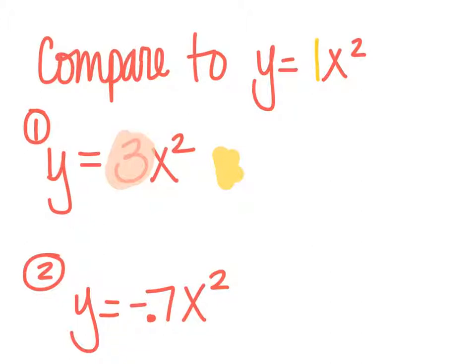And if it is vertical and 3 is bigger than 1, it's a vertical stretch of 3. That means it's by a factor of 3.